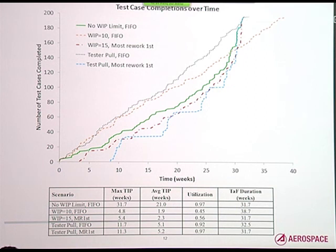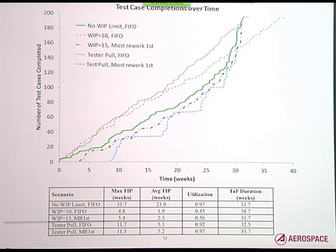Q: Do these graphs assume you know the total number of tests you're going to do when you begin? A: Yes, they do. You might prefer the green line because you get a lot of learning early, but then something weird happens and you suddenly need a thousand more tests — that's a scenario not captured in the current model.